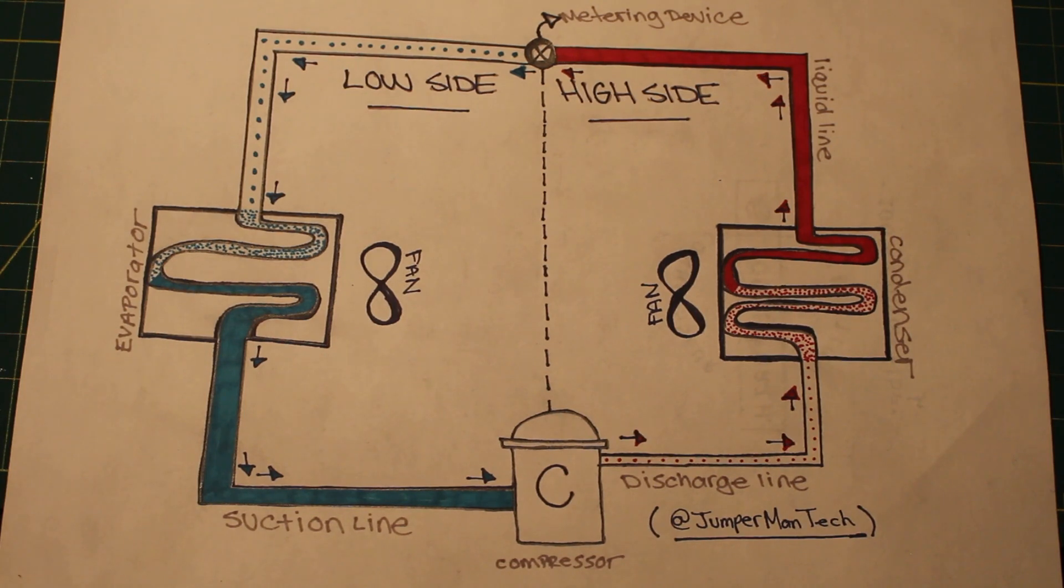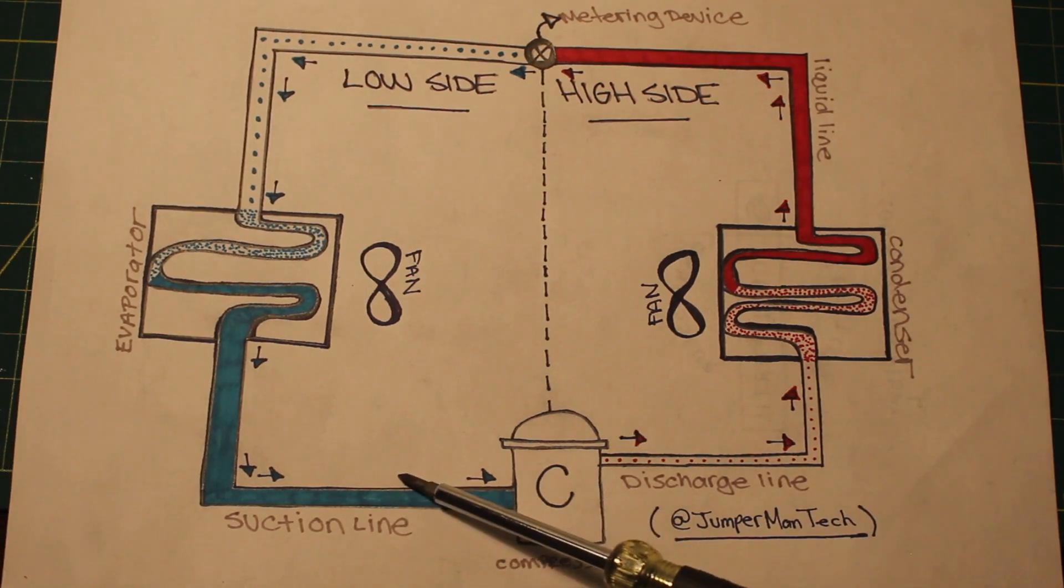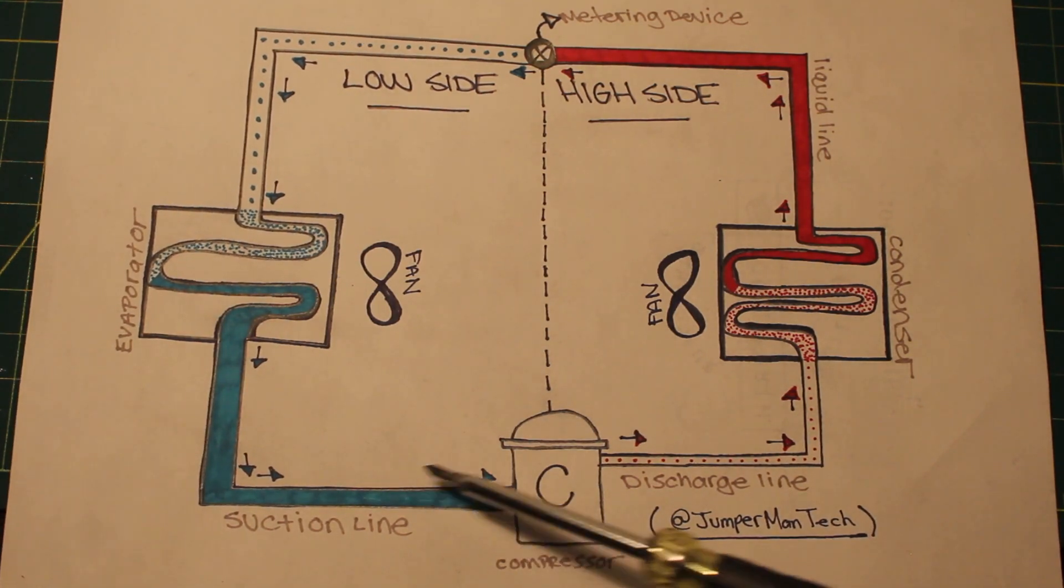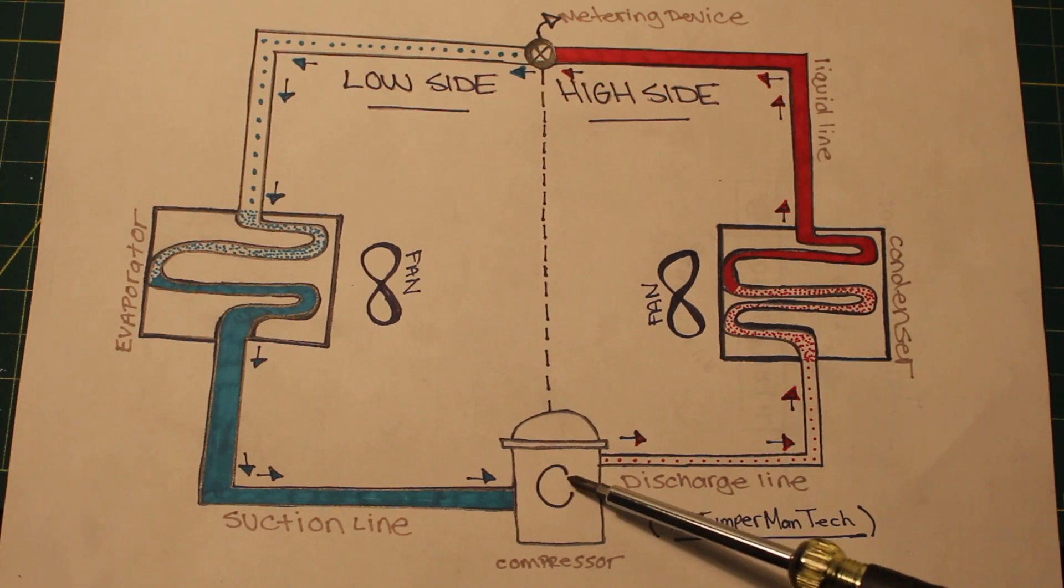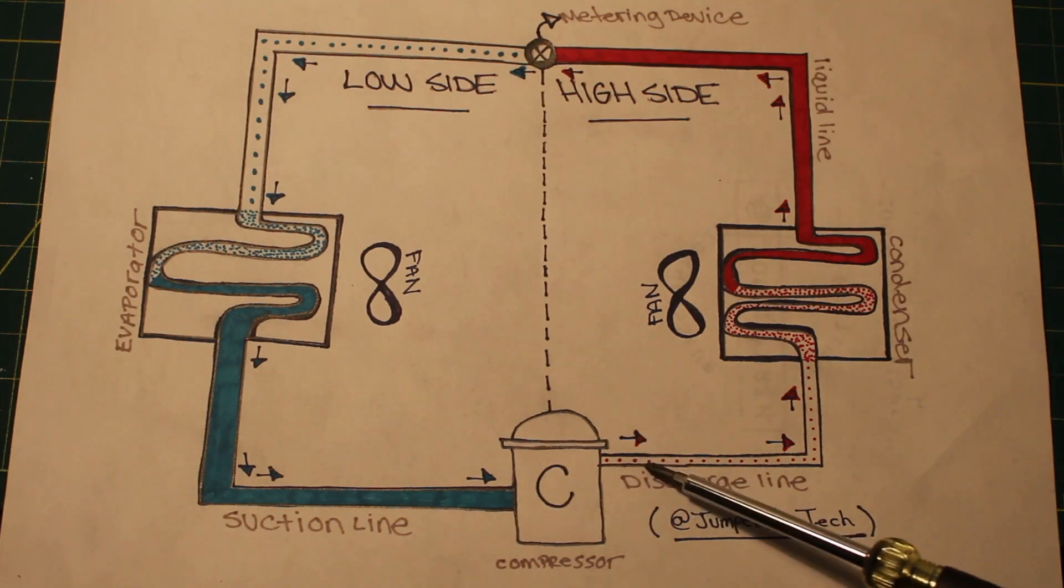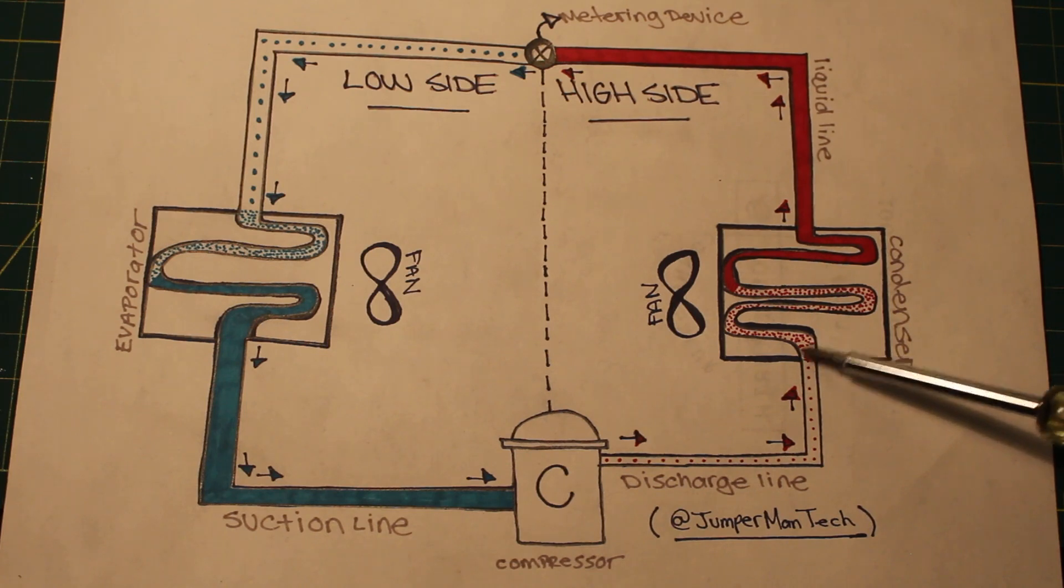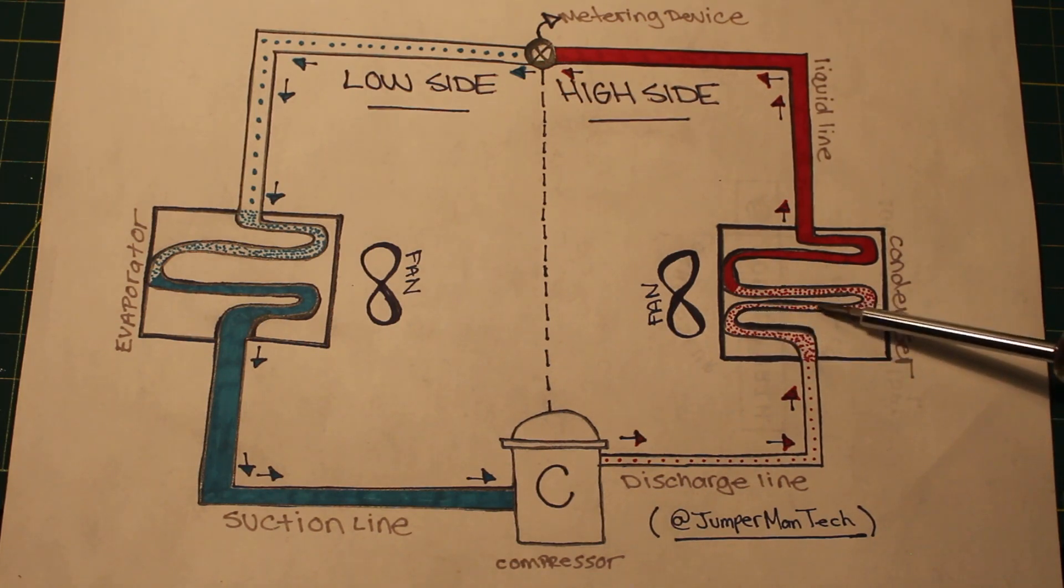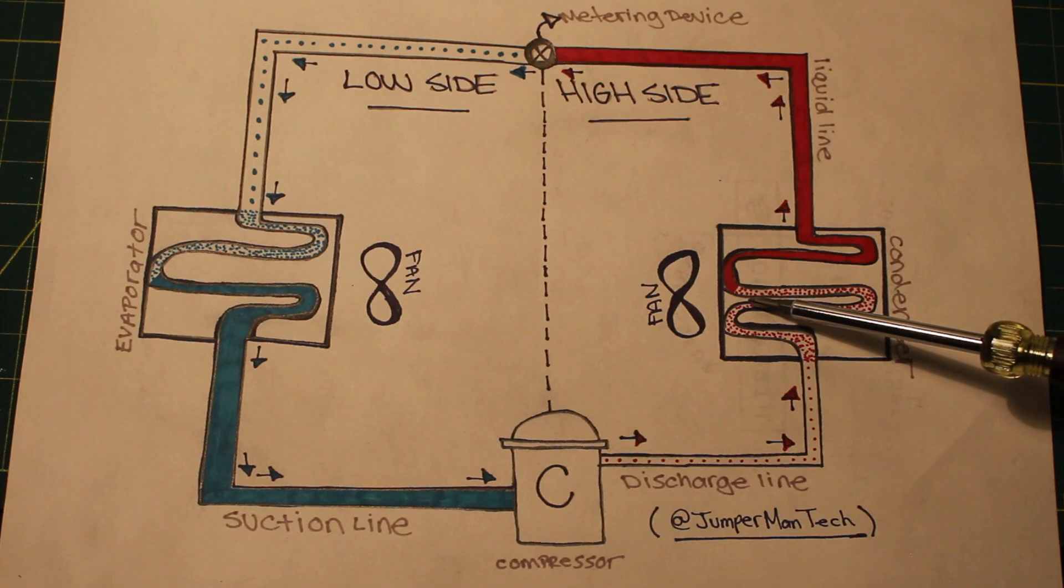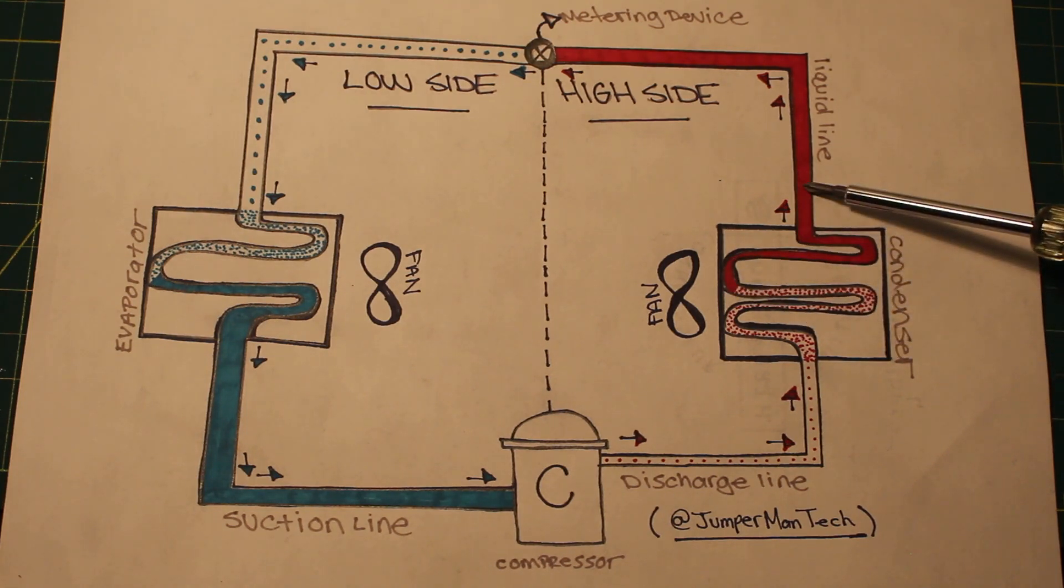Just to give you guys a quick recap: our refrigerant enters as a low pressure, low temperature, superheated vapor. It enters our compressor, compresses the refrigerant, and exits as a high temperature, high pressure vapor. It travels into our condenser where heat is being rejected. About midpoint, we fully condense. Now we exit through the liquid line as a high temperature, high pressure, sub-cooled liquid.